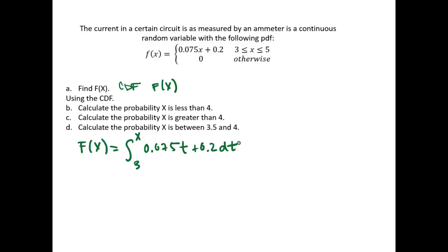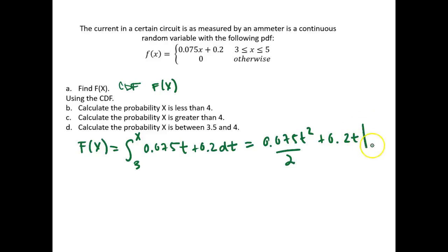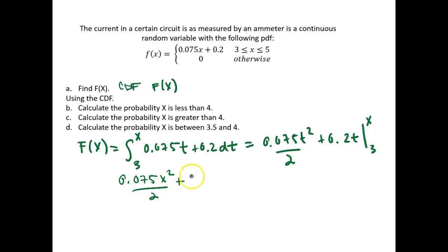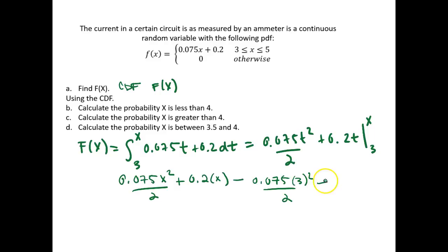This way I will have a function of x when I'm done integrating. So this is then equal to 0.075t squared over 2 plus 0.2t, evaluated from our lower bound of 3 up to our random variable x. Plugging in x gives 0.075x squared over 2 plus 0.2x minus 0.075 times 3 squared over 2 minus 0.2 times 3.